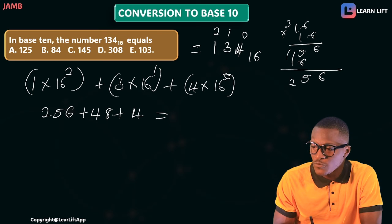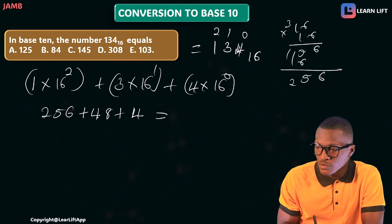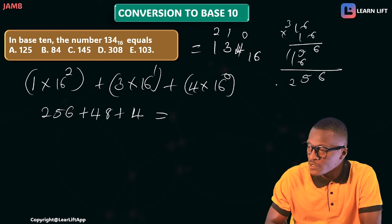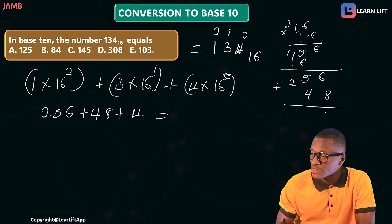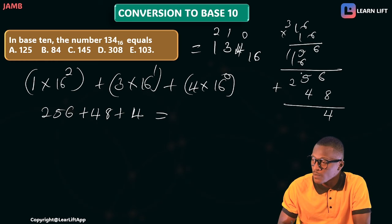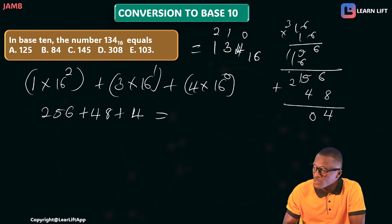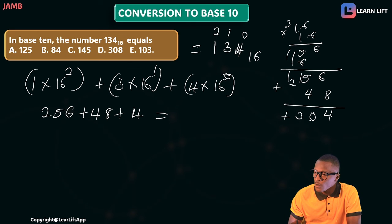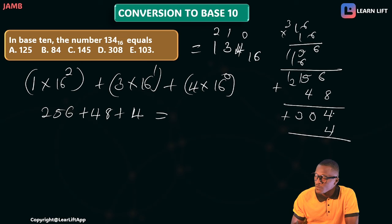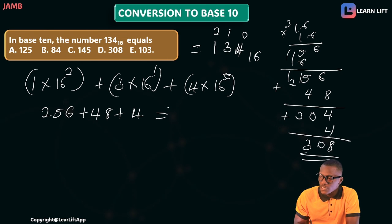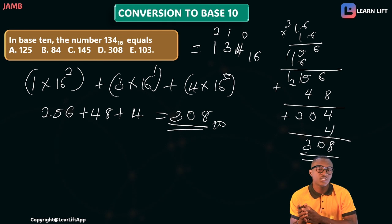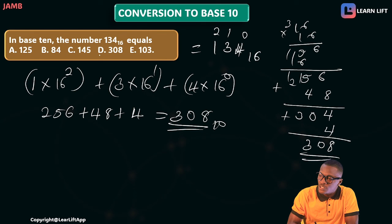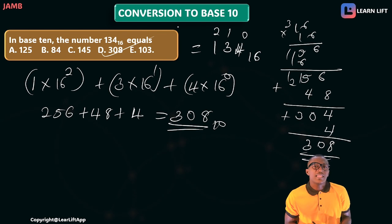Now adding: 256 plus 48 plus 4. First, 256 + 48: 6 + 8 is 14, carry 1; that gives 304. Then 304 + 4 = 308. So the answer is 308 in base 10, which is option D. You can confirm: 256 + 48 + 4 = 308.